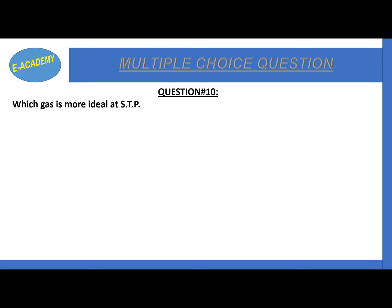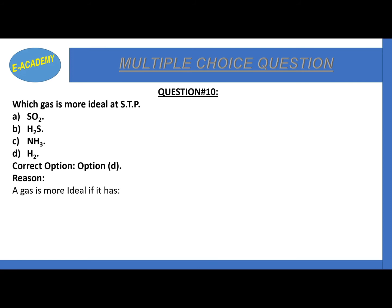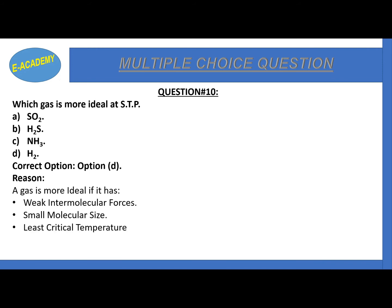Question number 10: which gas is more ideal at STP - SO2, H2S, NH3, or H2? The correct option is D - hydrogen gas, H2, is more ideal at standard temperature and pressure. A gas is more ideal if it has weak intermolecular forces, small molecular size, and the least critical temperature value. Among SO2, H2S, NH3, and H2, hydrogen has the smallest molecular size, weakest molecular forces, and least critical temperature.